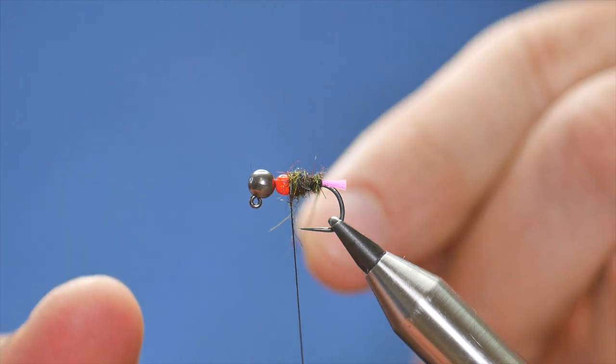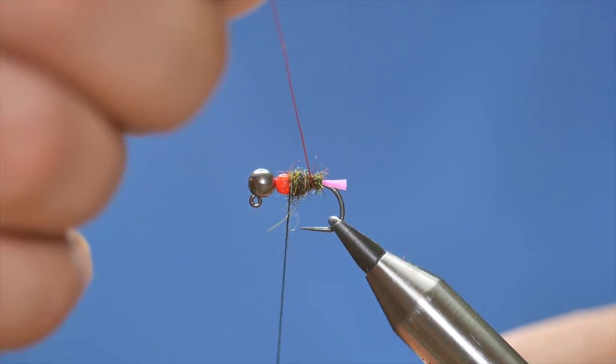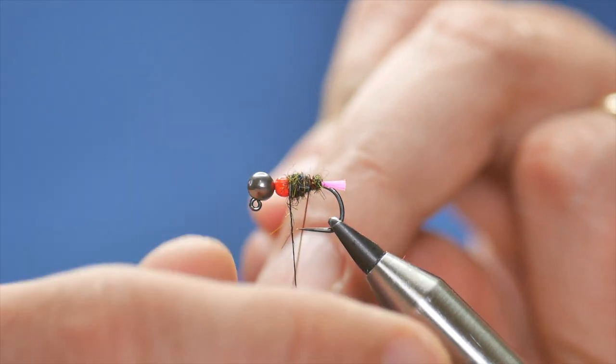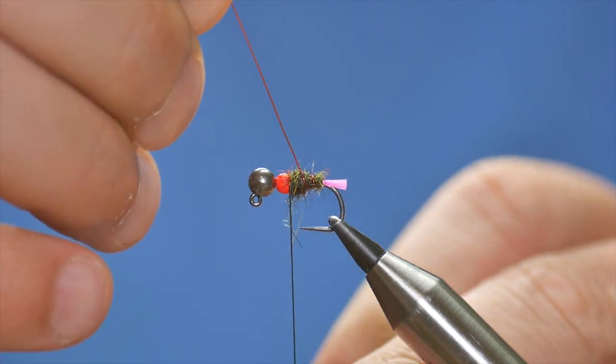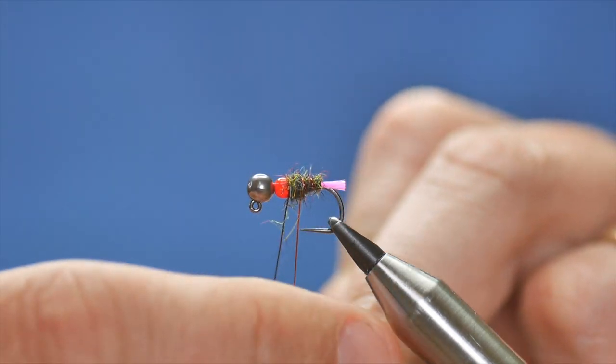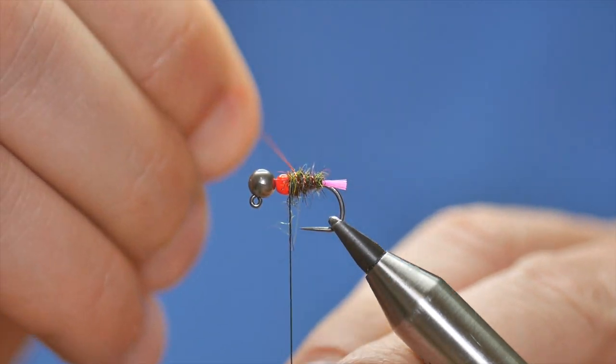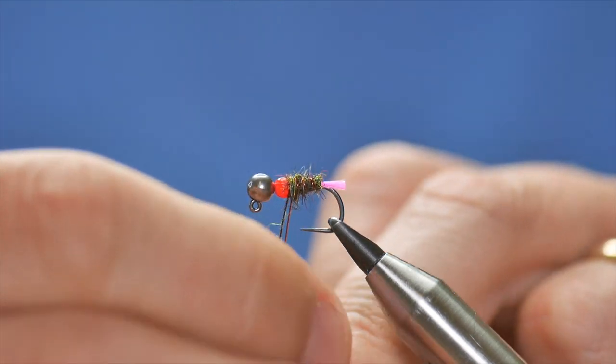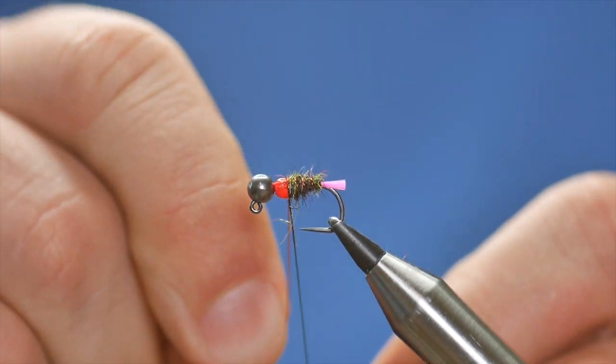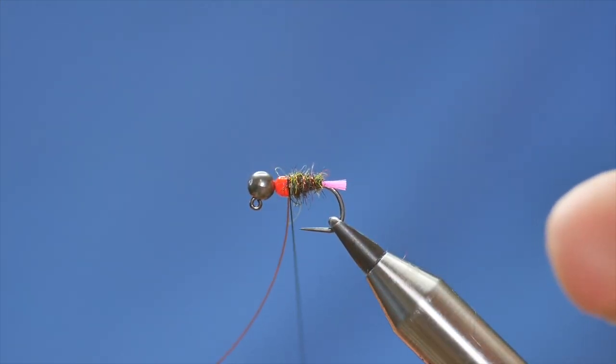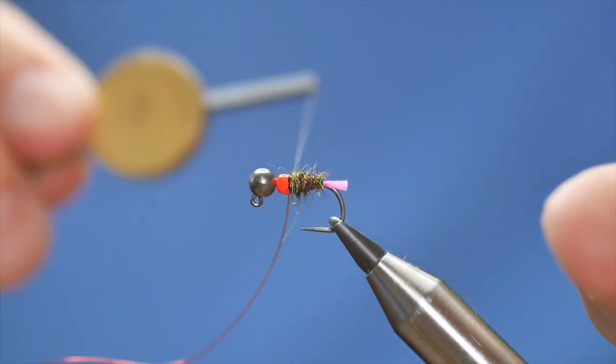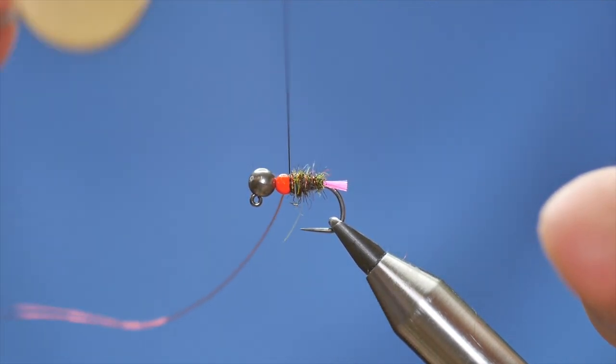Next, I'm going to bring my rib in the opposite direction to the way the dubbing went. Then, I might only get two or three turns in, but that's sufficient. Then, I'm going to bring that in at the seat of the bead. Come round with my thread. And, catch that in place.